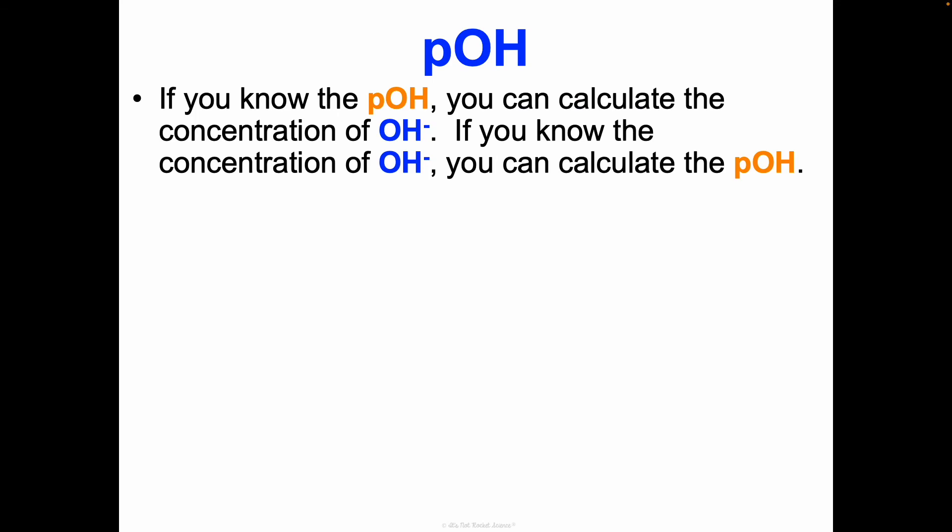We have similar calculations we can do with pOH. If you know pOH, you can find the hydroxide ion concentration. If you know the hydroxide ion concentration, you can find pOH. And if you know pOH, you can find pH and vice versa. So we can always move between these different variables. pOH equals the negative log of the hydroxide ion concentration, and the hydroxide ion concentration is 10^-pOH.